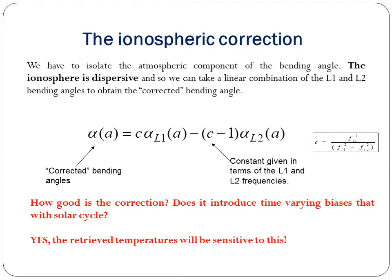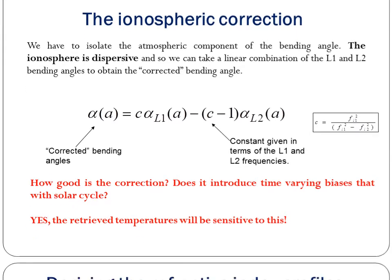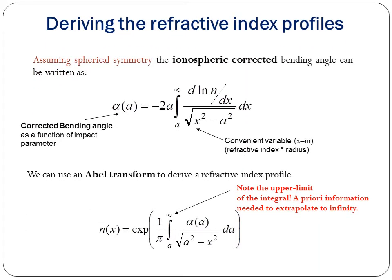Deriving the refractive index profiles is a major factor. Assuming spherical symmetry, the ionosphere-corrected bending angle can be written as alpha(A) = -2A, integrated from A to infinity, of the derivative of ln(N) divided by dx, divided by sqrt(x² - A²), times dx. Here alpha(A) is the corrected bending angle as a function of impact parameter, and X is n times r. We use an Abel transform to derive the refractive index profile: N(x) = exp(1/pi * integral from A to infinity of alpha(A) / sqrt(A² - x²) dA), where the upper limit is prior information extended toward infinity.